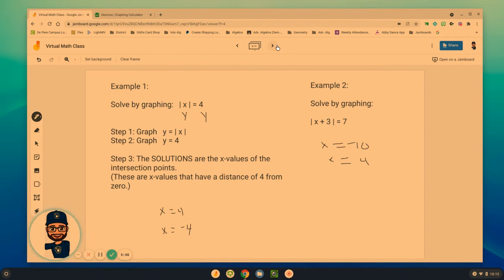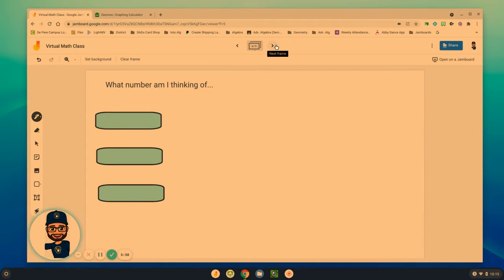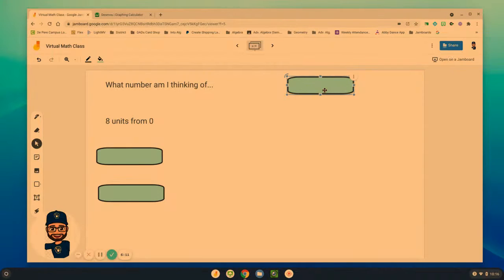So that's how we can use graphing to help us if they're asking us to solve by graphing. But we can also eventually learn how to do these by hand. And in order to do that, we need to go through this series of questions. So what number am I thinking of? Something that is 8 units from zero. Well, that could be two numbers. It could be 8, because 8 is 8 away from zero. Or it could be negative 8, because negative 8 is also 8 units away from zero.